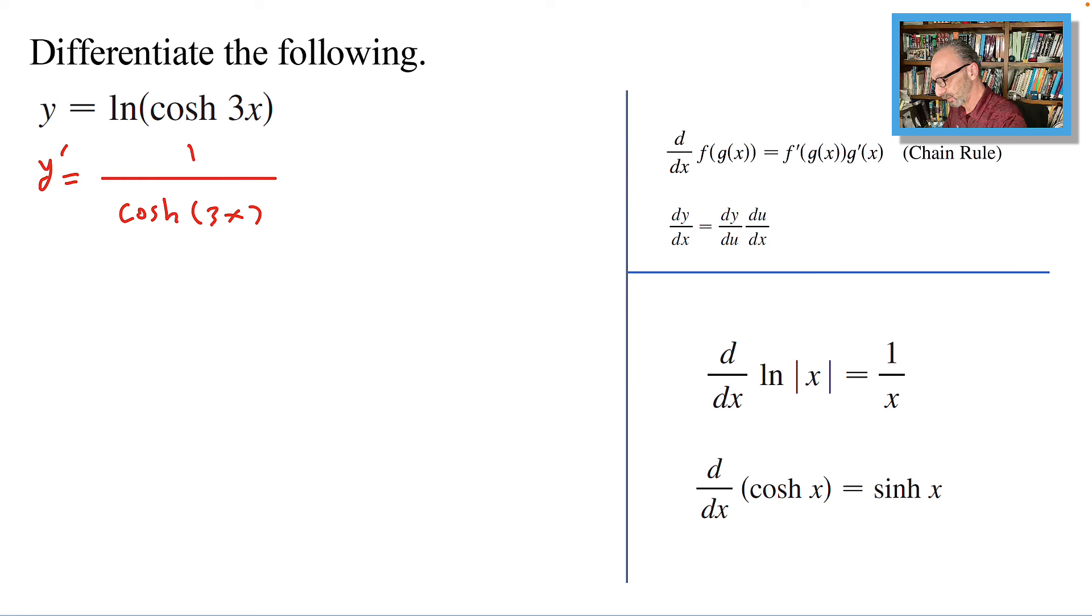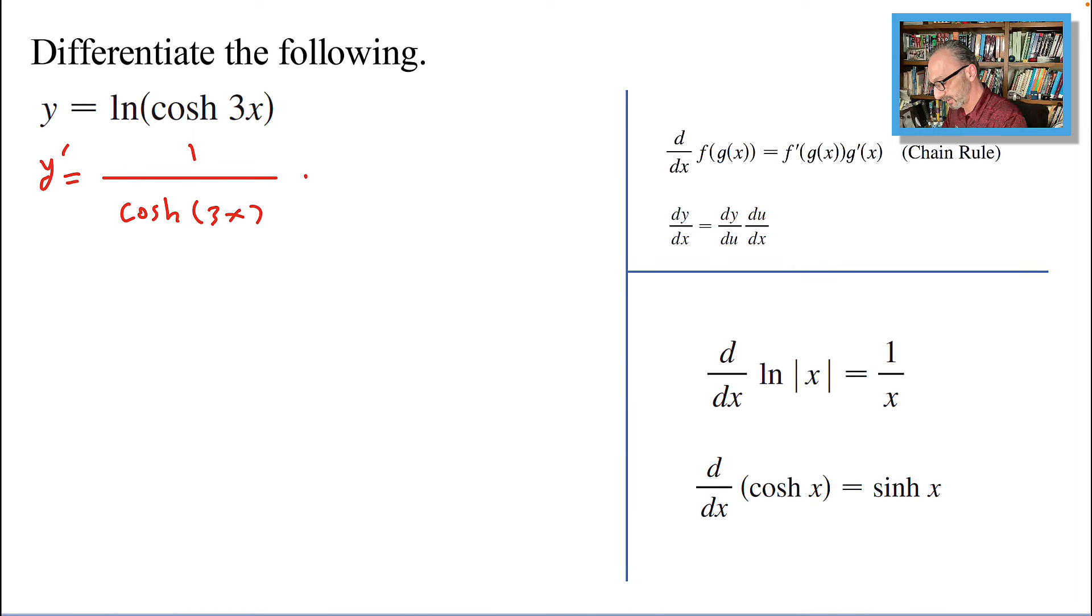So we will end up multiplying by the derivative of hyperbolic cosine, which is hyperbolic sine. Still, our angle is not x by itself, it's 3x, so we need to find the derivative of 3x.